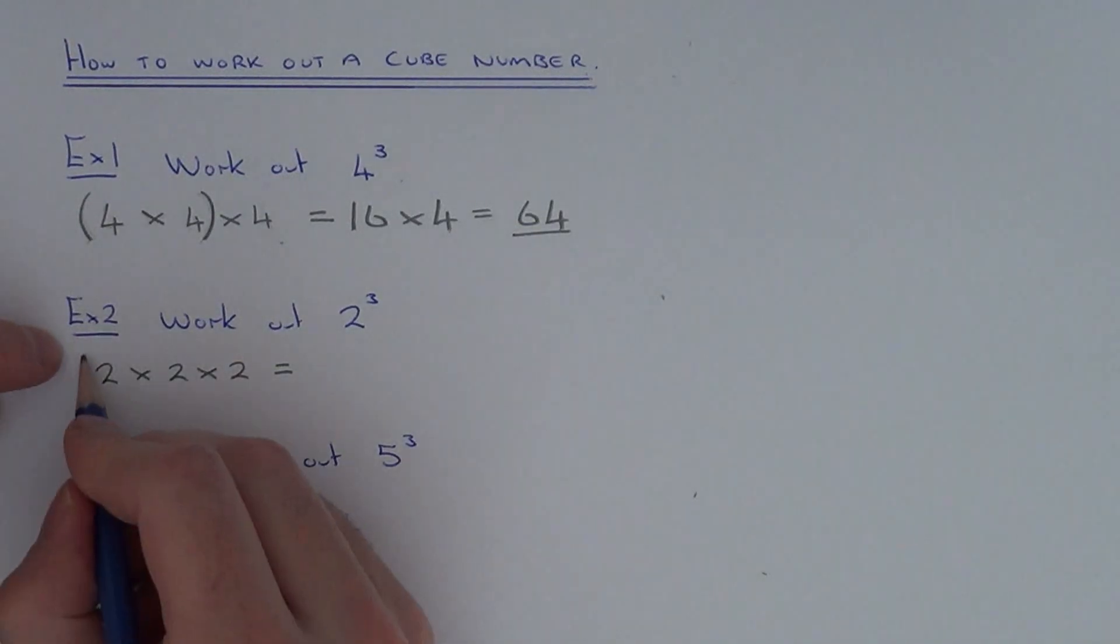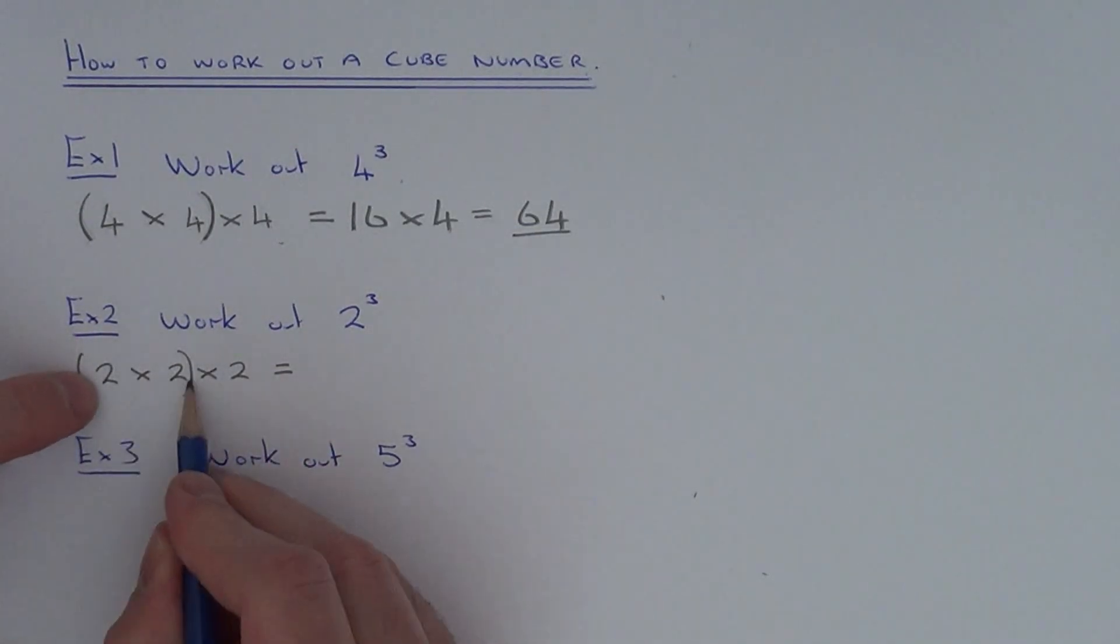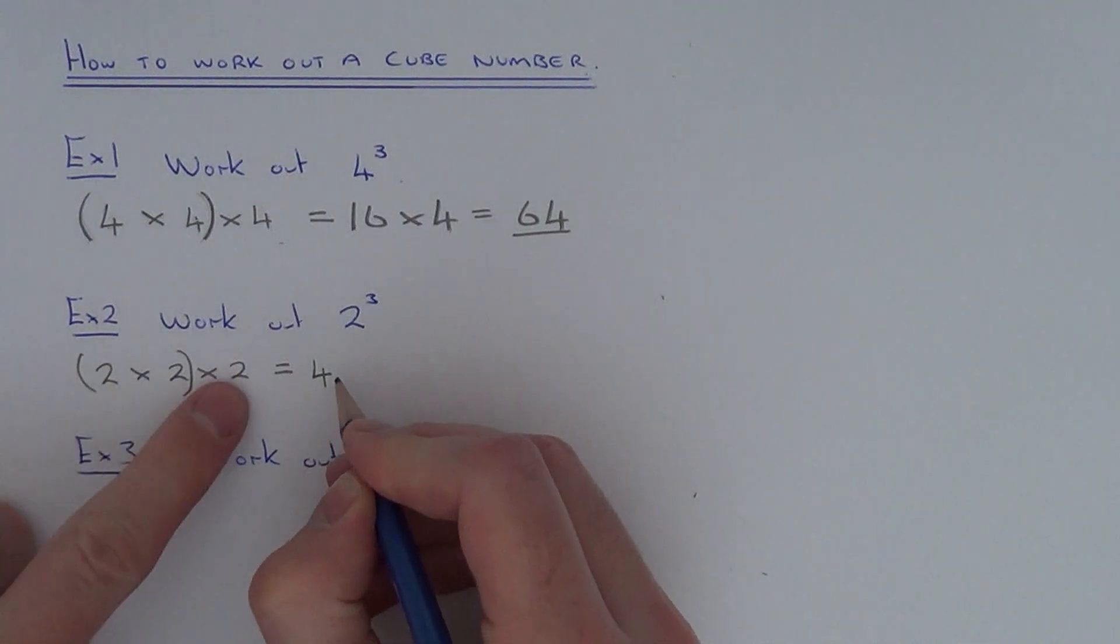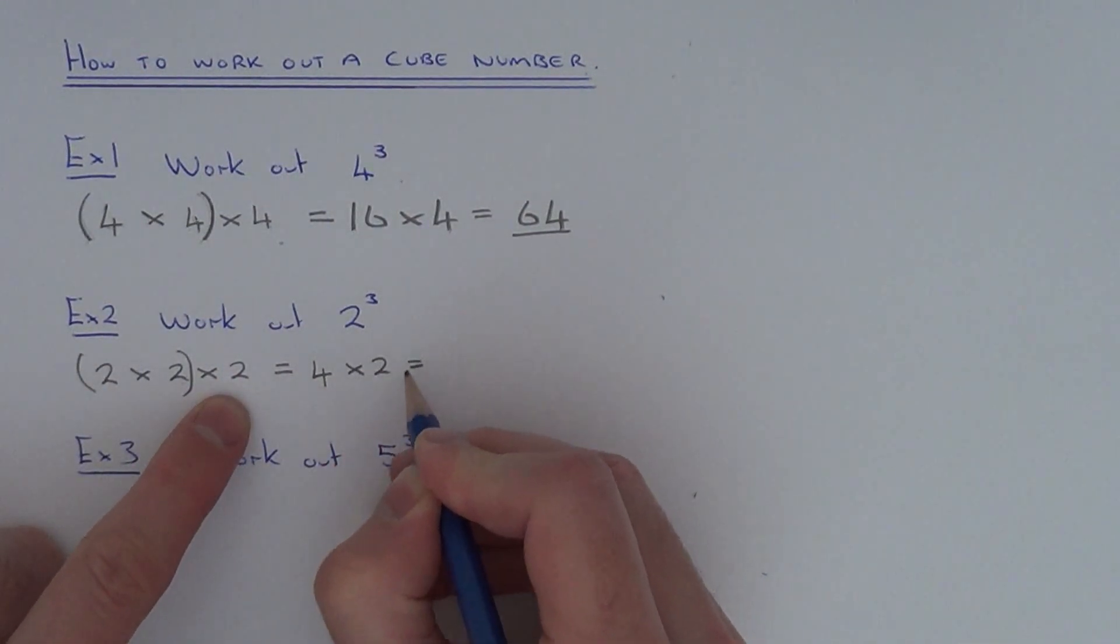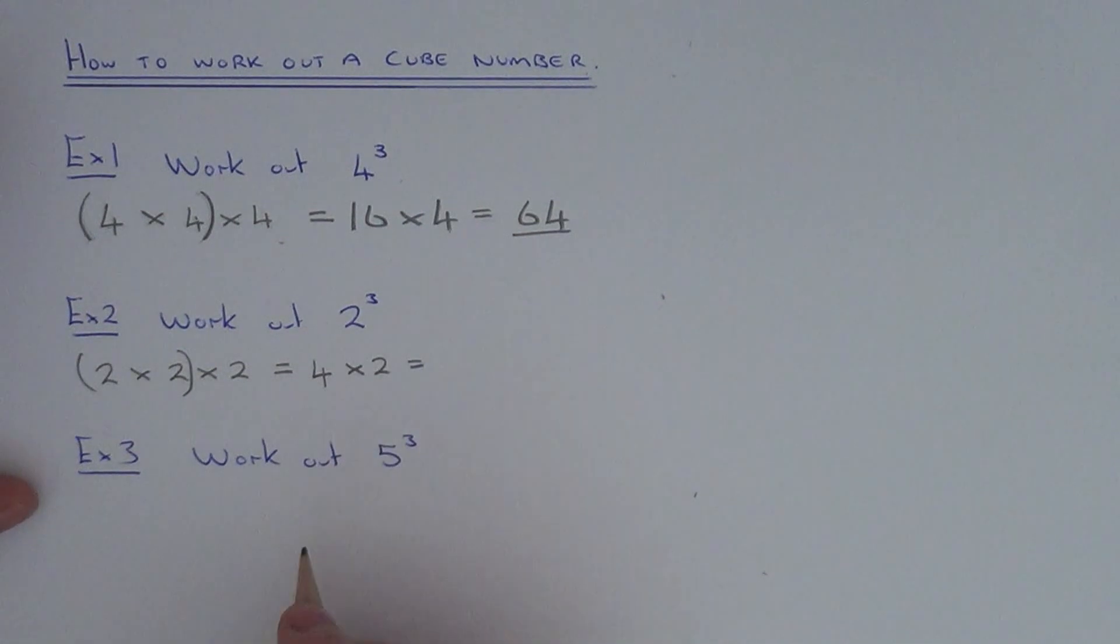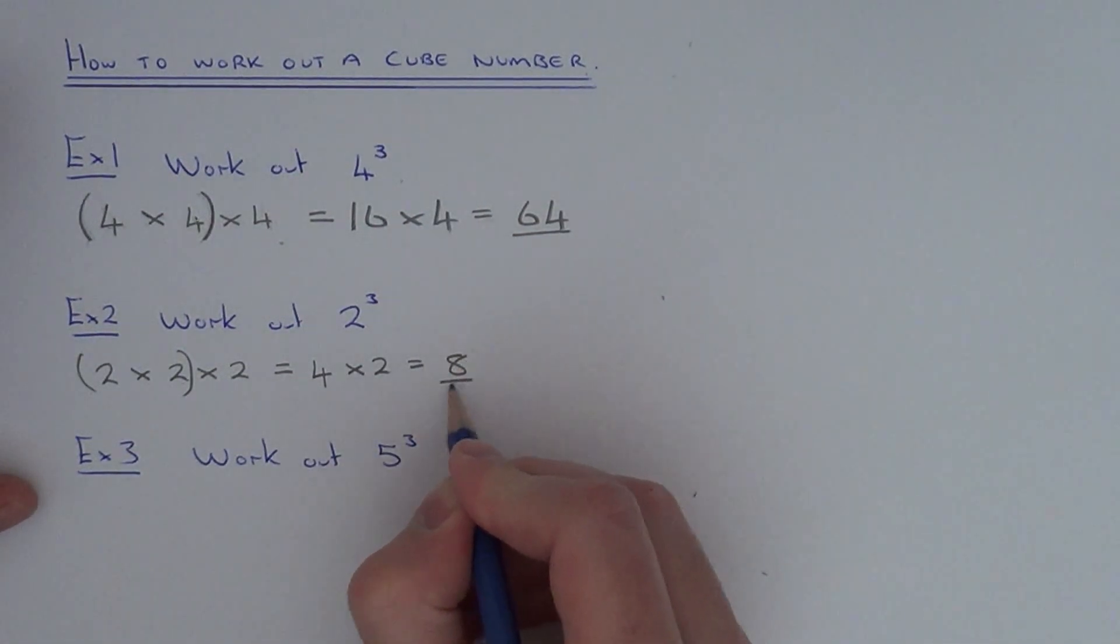Let's work out 2 times 2 first of all, that gives us 4. And then we need to multiply that answer by the final 2, so 4 times 2 gives us 8.